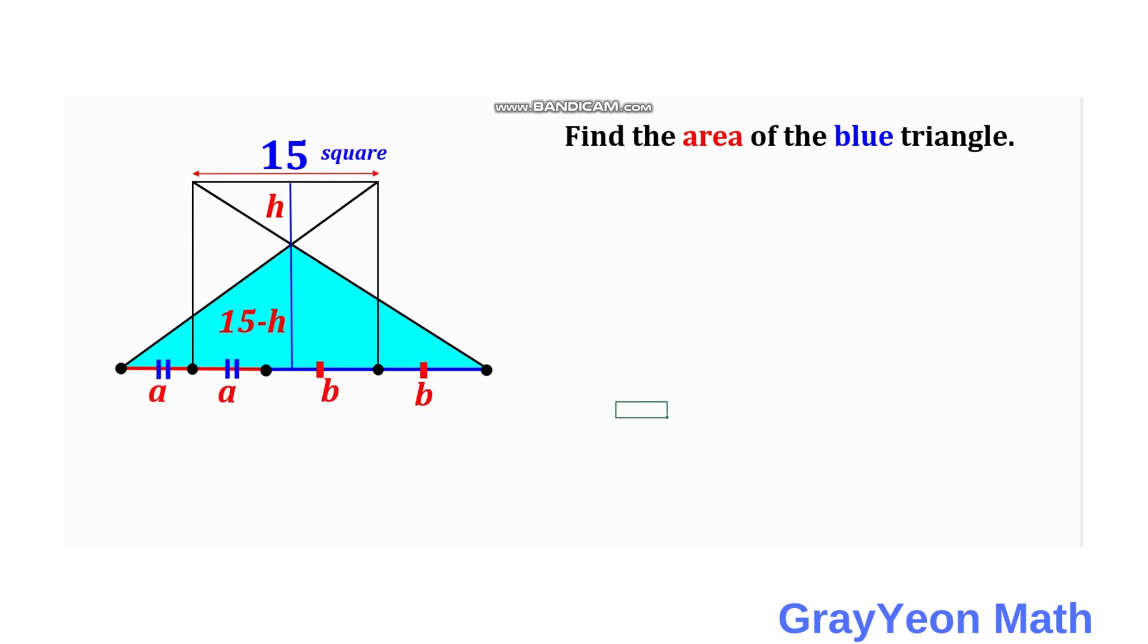So next thing is we notice that this length A plus B is actually equal to 15. This length A plus B, it is actually the side of the square, equal to 15.